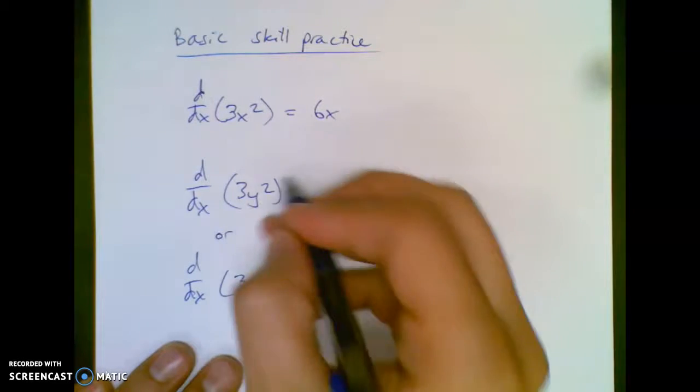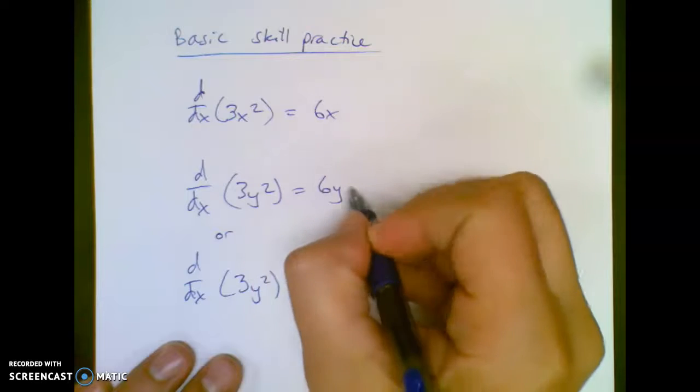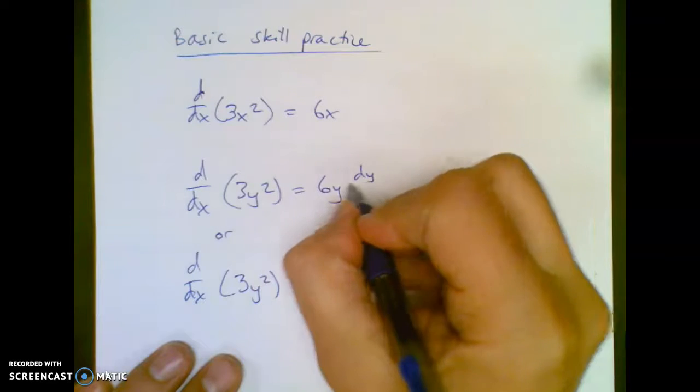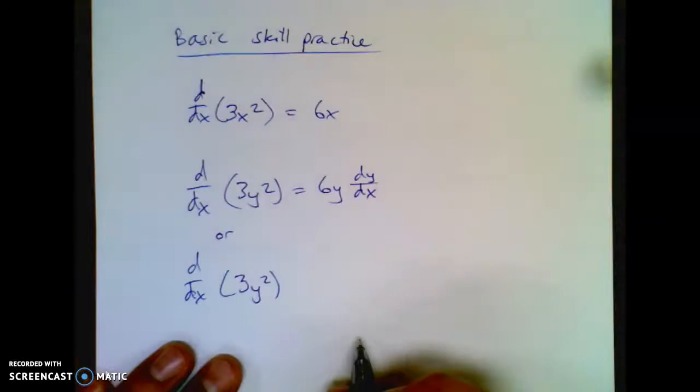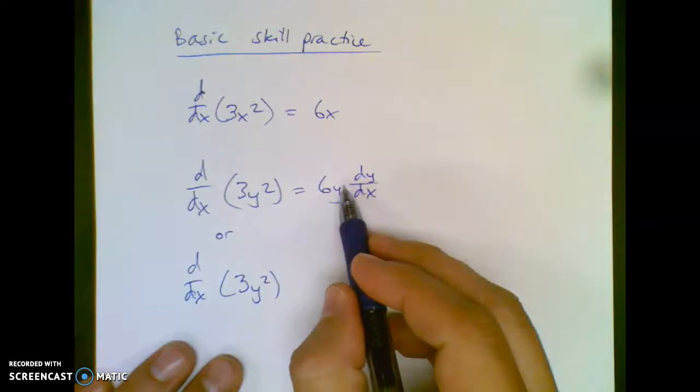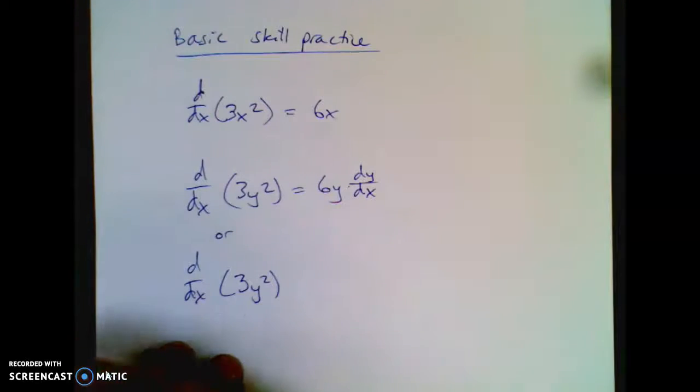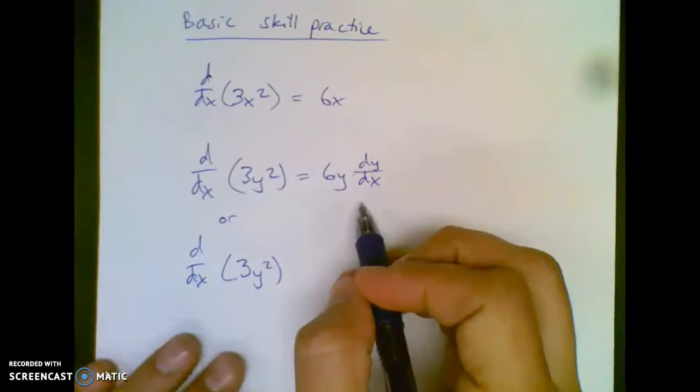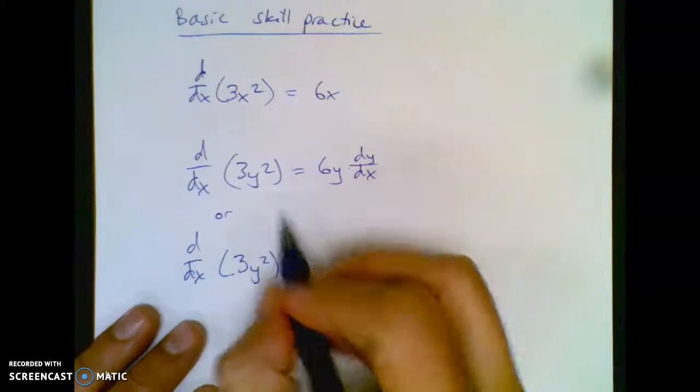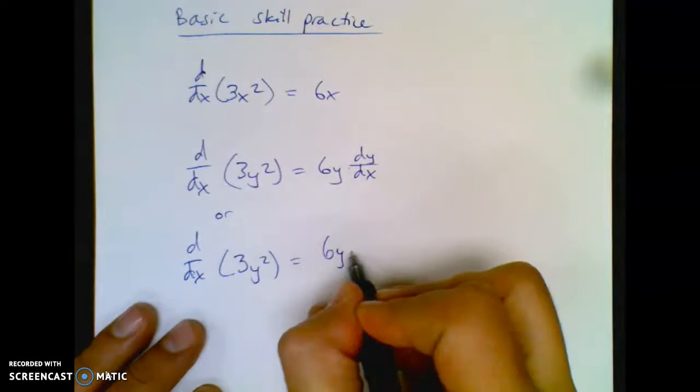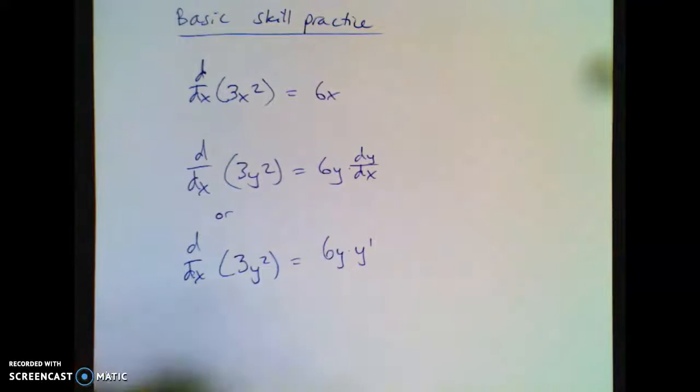Now if you go to do this one, it's the same deal. Well, it's still 6y, but you also have this penalty, since it doesn't match in letter, to attach, kind of like the Ninja rule, the derivative of y with respect to x, dy/dx. Or, alternatively, if you want to write that as y prime, that's fine too.